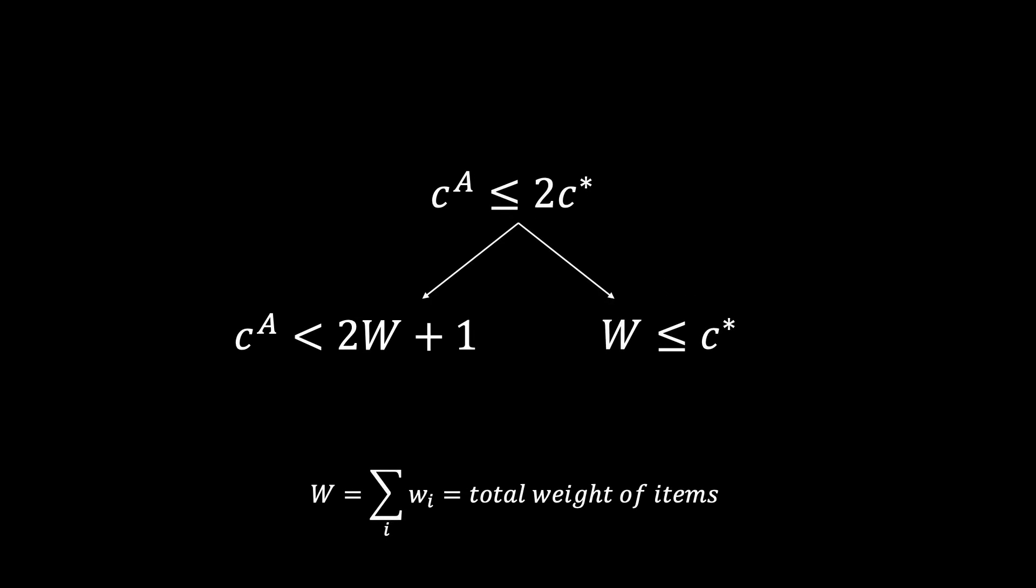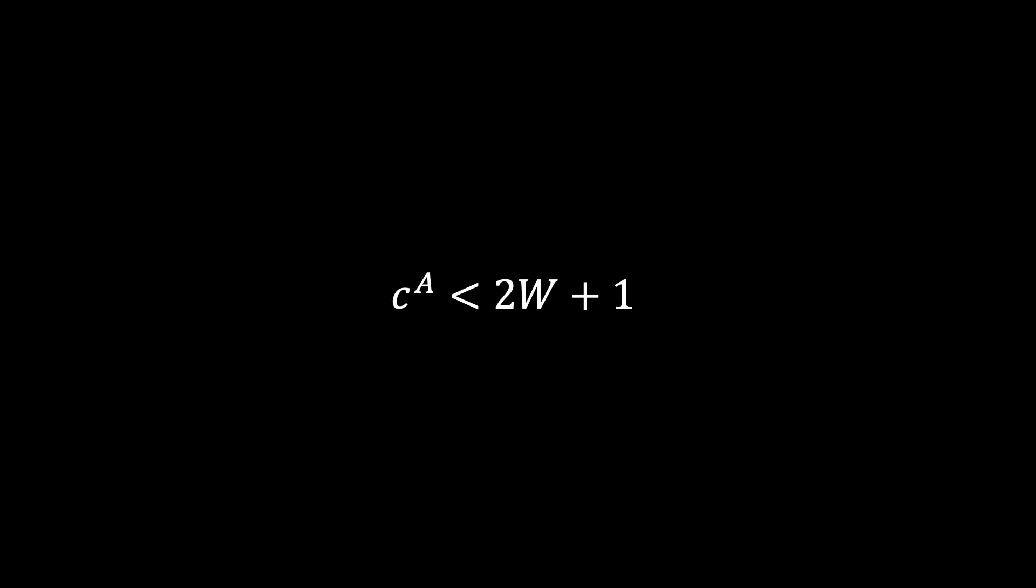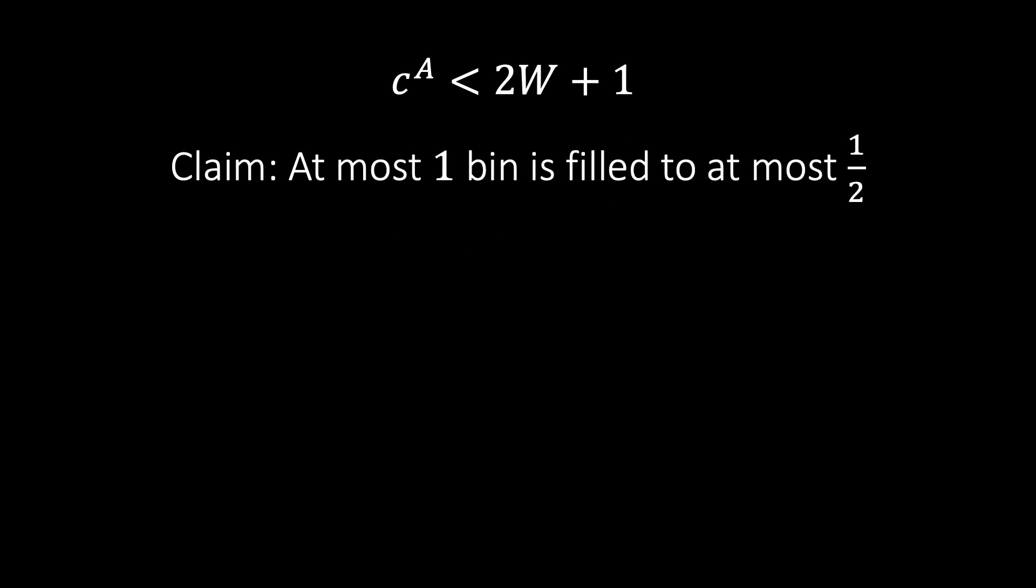Now let's look at the second statement, and understand why CA is less than 2W plus 1. First we claim that almost all bins are at least half full. More precisely, at most 1 bin is only half full.